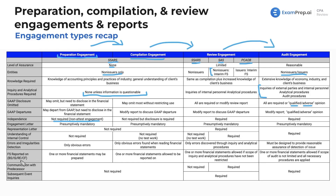Regarding financial statements reportable: for preparations, compilations, and reviews, one or more financial statements may be reported on, with the review requiring that the scope of inquiry and analytical procedures not be restricted. For audits, one or more financial statements are allowed so long as the scope is not limited and all necessary procedures are applied. Communication with the predecessor auditor and inquiries of subsequent events are not required for preparation or compilation. For reviews of non-issuers, predecessor communication is not required, but it is required for interim financial statement reviews. Inquiries of subsequent events are required for all review engagements. Both are required for audit engagements.